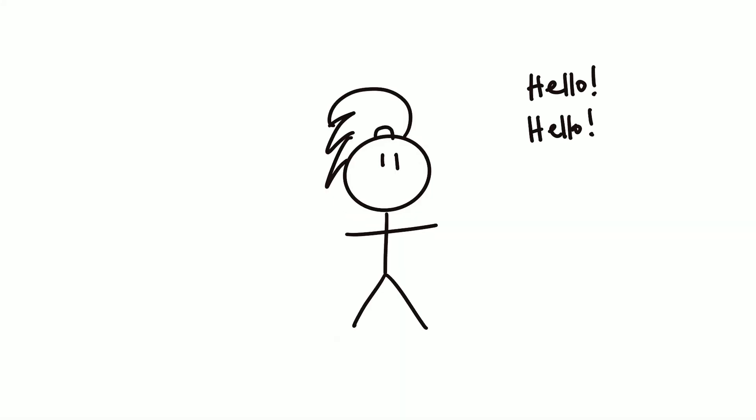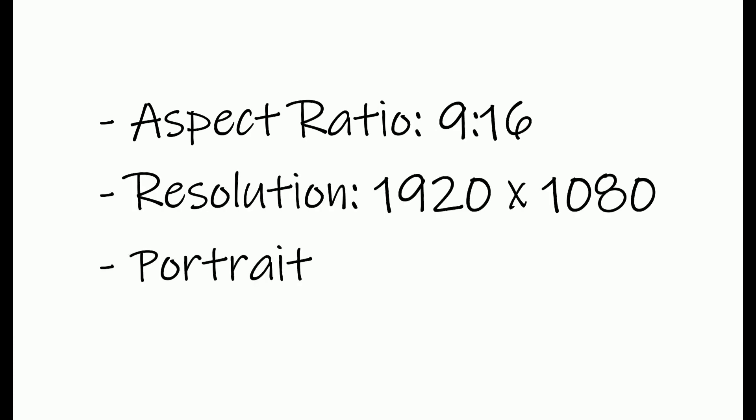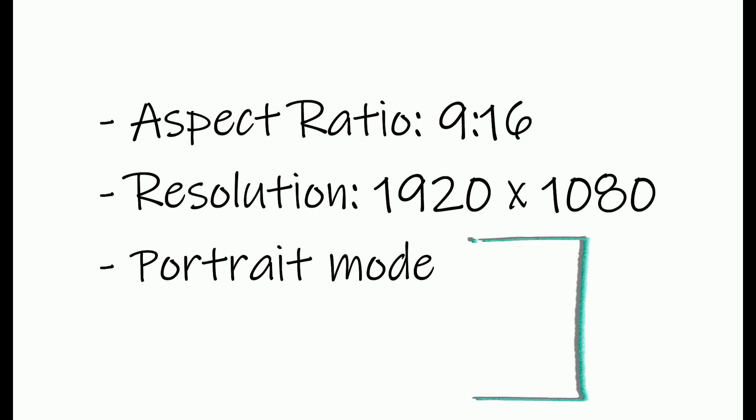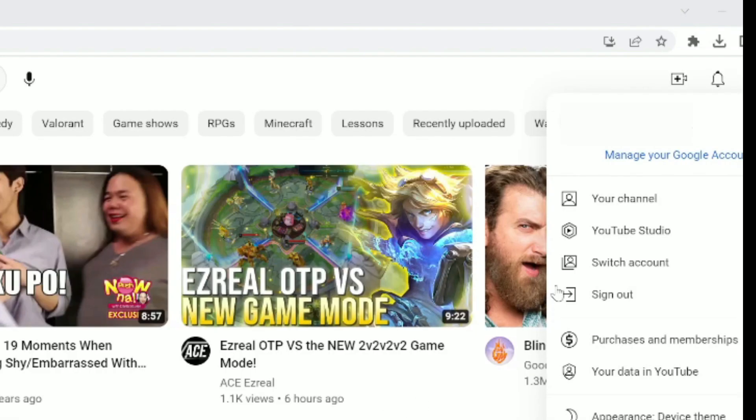Welcome to the channel. You are watching how to upload YouTube Shorts on PC. First, make sure your video has an aspect ratio of 9:16 or a resolution of 1920 by 1080 pixels. Also make sure it's in portrait mode. On your profile, go to your channel.